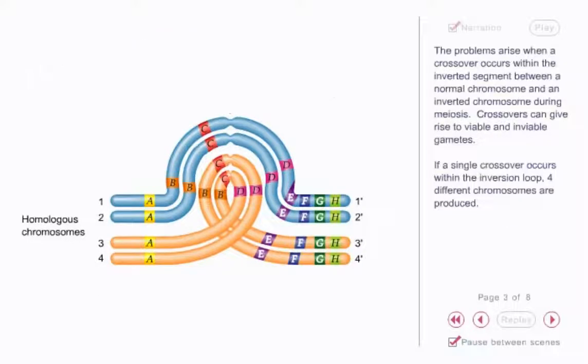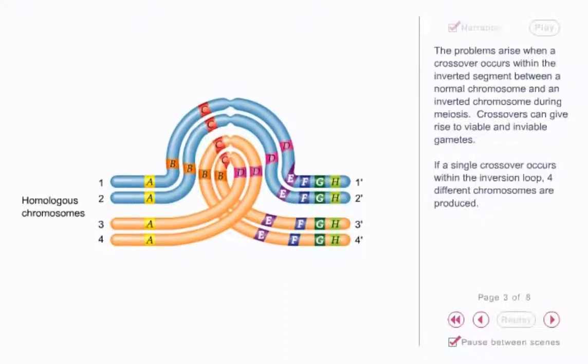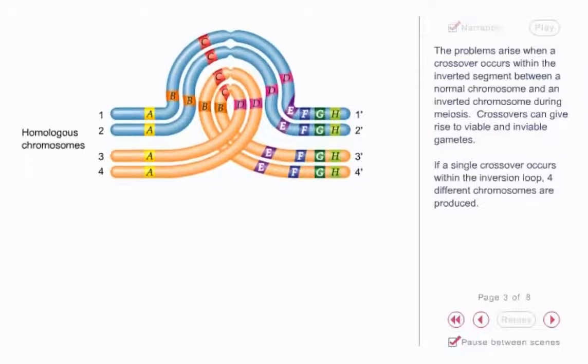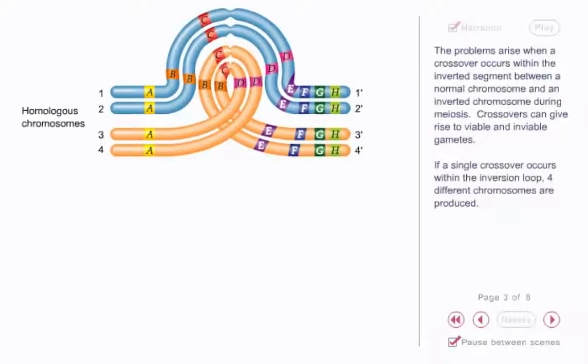The problems arise when a crossover occurs within the inverted segment between a normal chromosome and an inverted chromosome during meiosis. Crossovers can give rise to viable and inviable gametes. If a single crossover occurs within the inversion loop, four different chromosomes are produced.